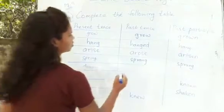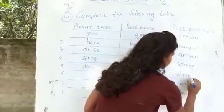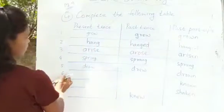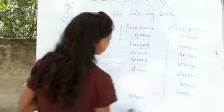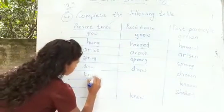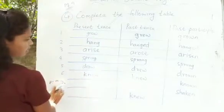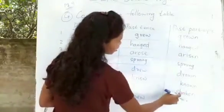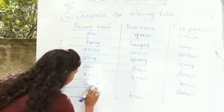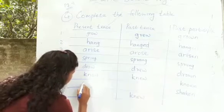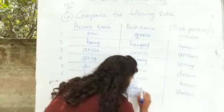Next, draw. Drew, drawn. In your sixth, two dashes are left and in your past participle, it is given known. So, know, knew, then known. Here, in your seventh, it is given directly for past participle, shaken. So here, in your present tense, it will be shake. Shook, then shaken.